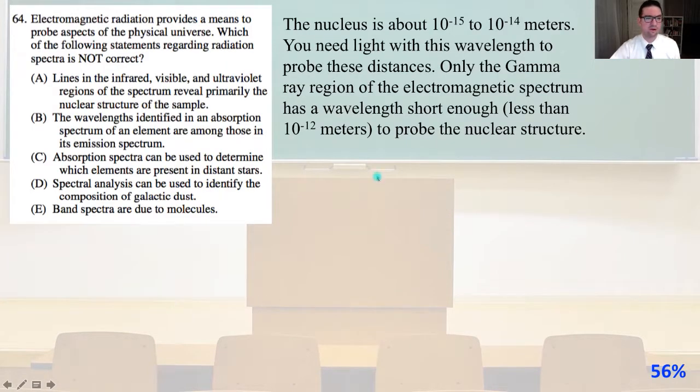Number 64. Electromagnetic radiation provides a means to probe aspects of the physical universe. Which of the following statements regarding radiation spectra is not correct? The nucleus is about 10⁻¹⁵ to 10⁻¹⁴ meters. And you need light with this wavelength to probe these distances. Only the gamma ray region of the electromagnetic spectrum has a wavelength short enough, less than 10⁻¹² meters, to probe the nuclear structure. So therefore, answer A must be false.